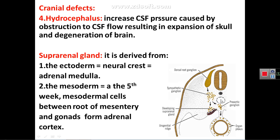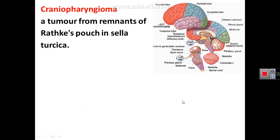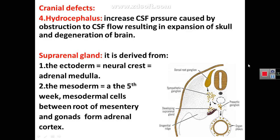You should know that the name of the tumor derived from remnants of Rathke's pouch is called craniopharyngioma. That concludes the discussion on CNS development and embryology of the nervous system. Thank you very much.